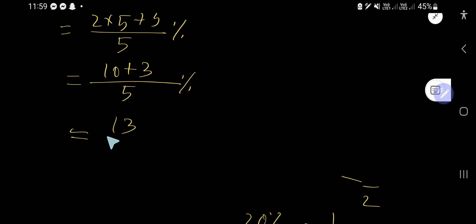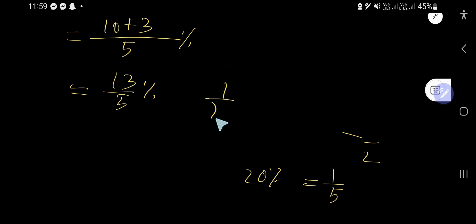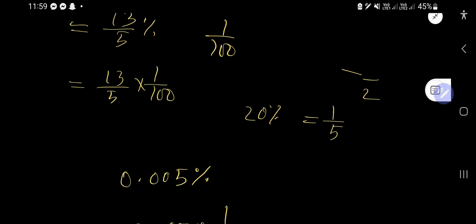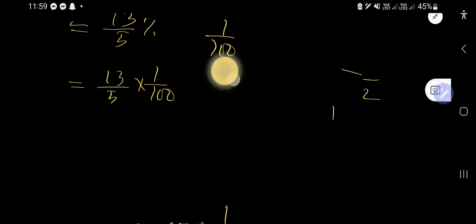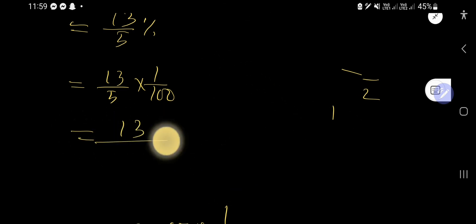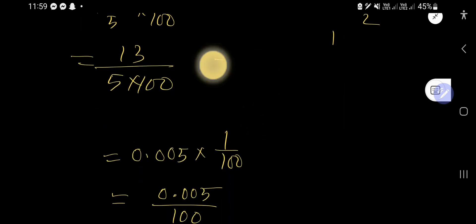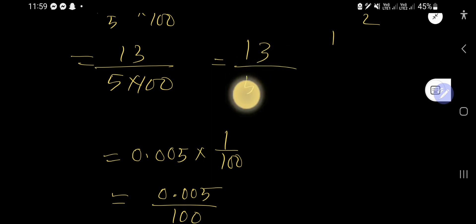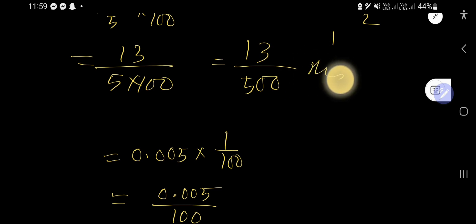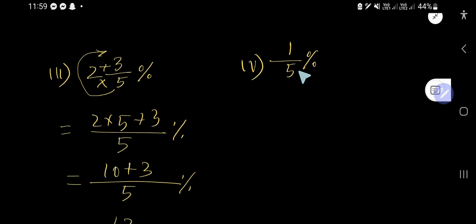That gives us 13 over 5 percent. Replace the percent sign with 1 over 100 and multiply: 13 over 5 times 1 over 100 equals 13 over 500. There is no common factor between 13 and 500, so 13/500 is the final fractional form.